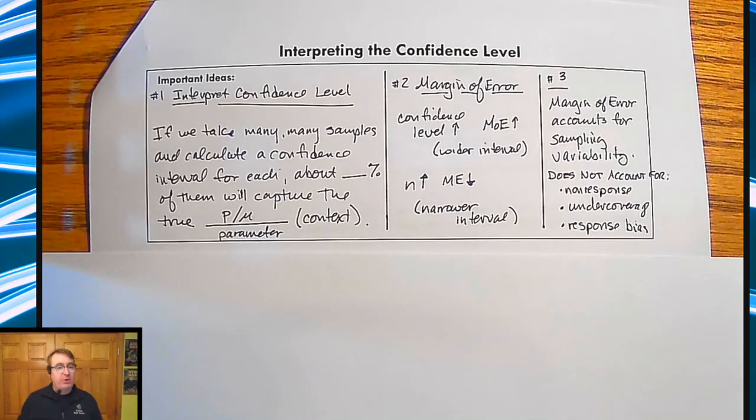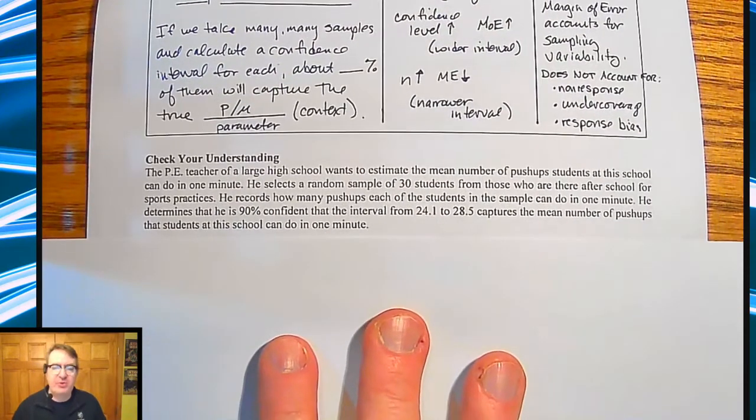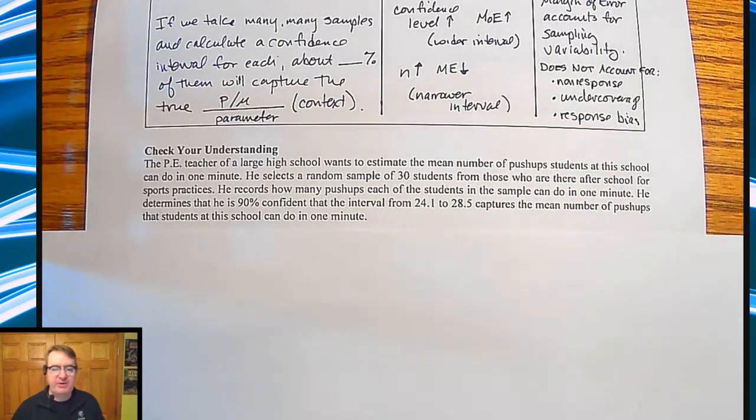For our example, we're going to go to the PE department. There is a PE teacher at a large high school. He wants to estimate the mean number of pushups students at the school can do in one minute. So he randomly selects 30 students who are there for after school sports practices. They'll give you a confidence interval. So go through, do the interpretation and answer the other questions and come on back and we'll check your answers.